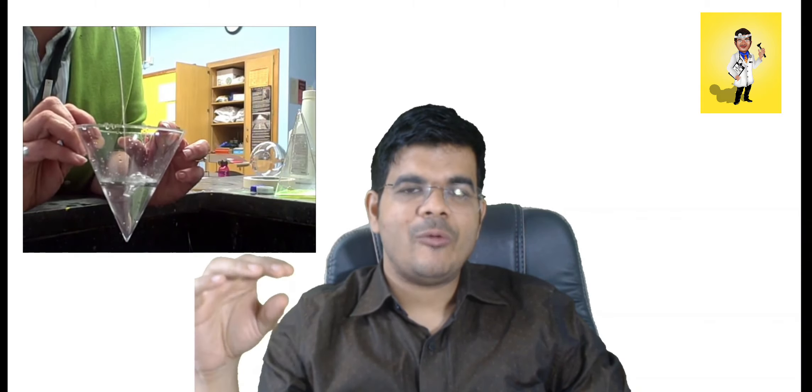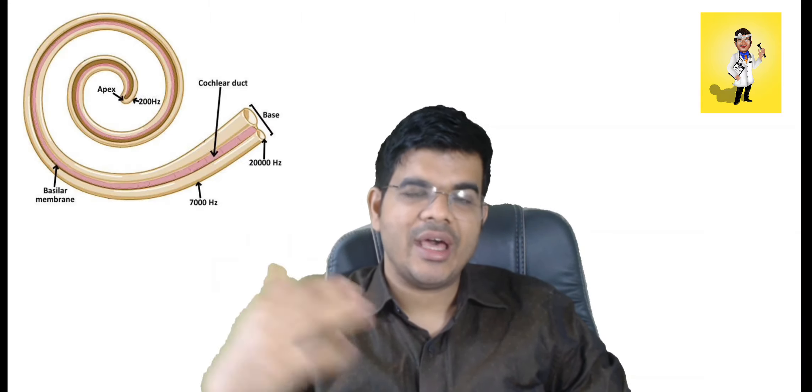The distension when it occurs in the apex of the scala media, the hair cells in the apical region get affected and only the area which is of low frequency is getting affected, because low frequency area is detected by the apex of the scala media.